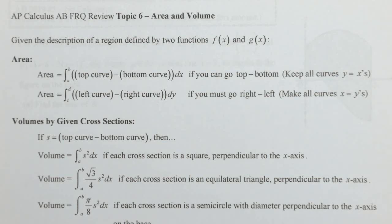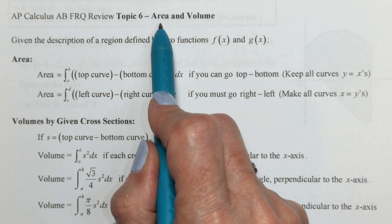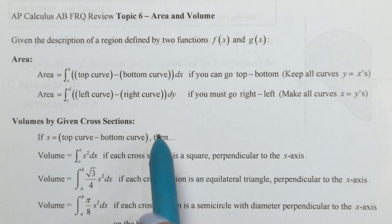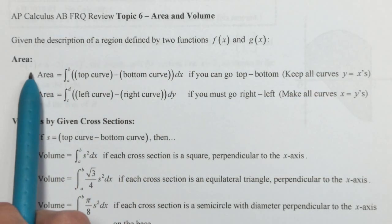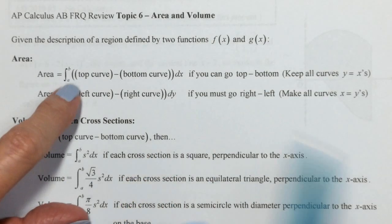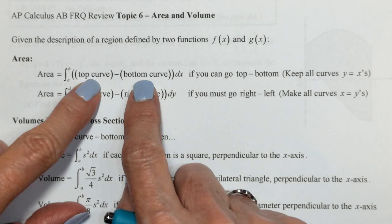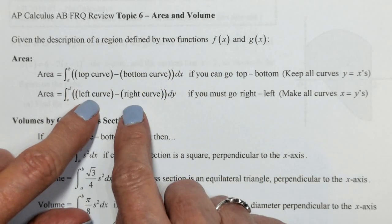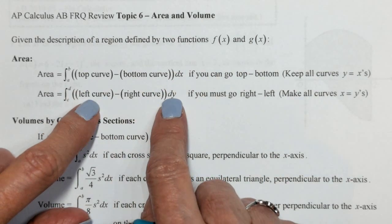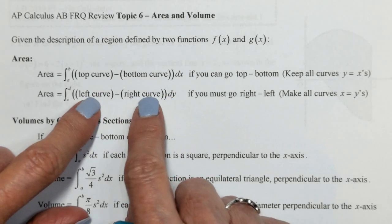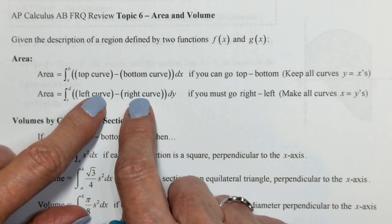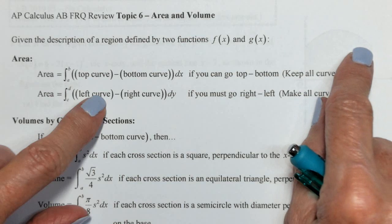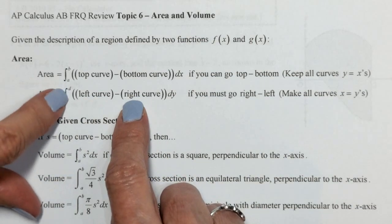We are on our FRQ topic on area and volume. For areas and volumes, we need to remember some key concepts. For area, we think that area is the integral of your top curve minus your bottom curve if you're in a dx. Keep all x's. Left minus right if you have a dy. If you have a dy, your left and your right are going to have y's in them, no x's. You have to take your equation and solve it for x, and your boundaries will have y boundaries.